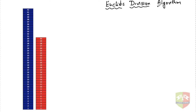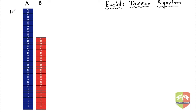But before that, I have a problem to solve. The problem statement is: I have two strings — let's call them String A and String B. String A is 42 units long and String B is 30 units long. The question is: I have to cut both strings into parts.